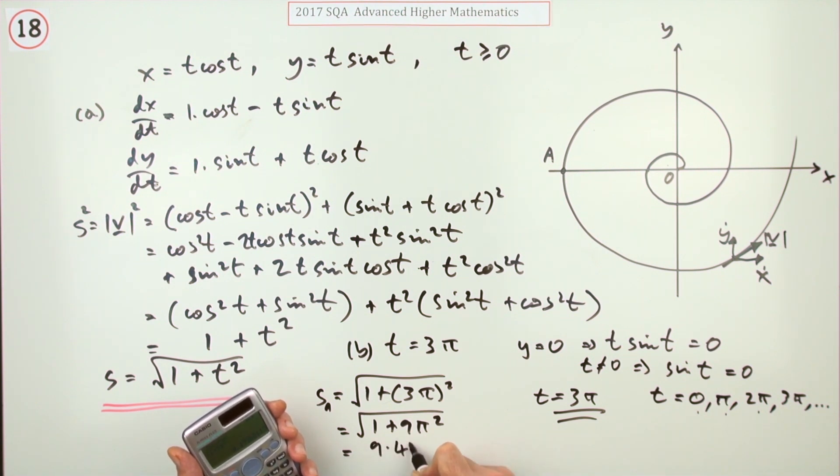Unless you want to go for a decimal, which if you did would be 9.477 and so on, which I'll just call 9.5. So either the exact answer or this approximate decimal answer.